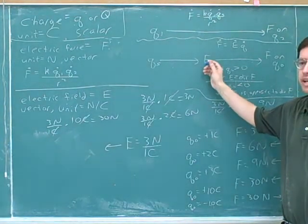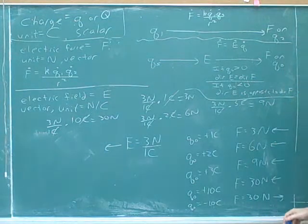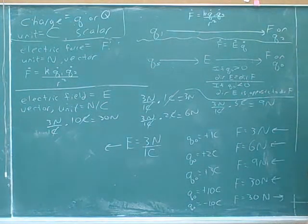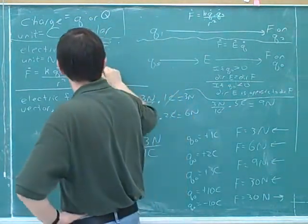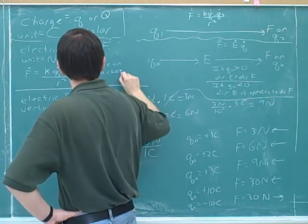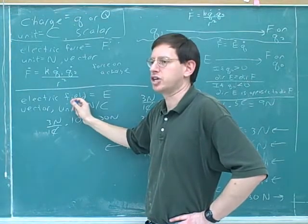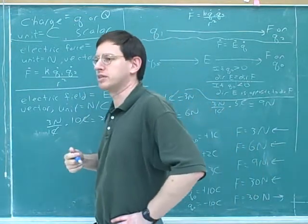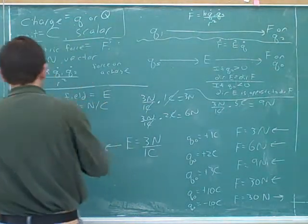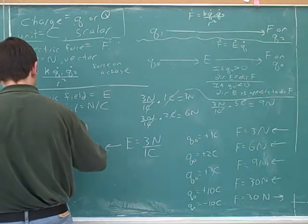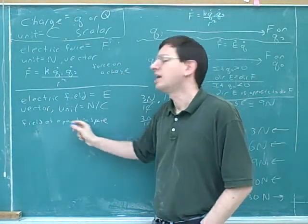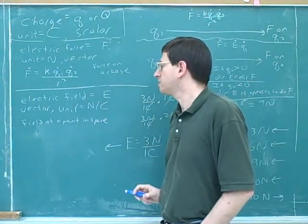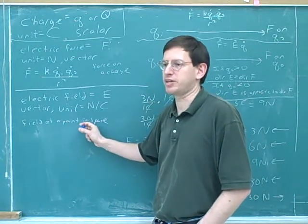So why is it so useful to know the electric field at a point in space? Because then that makes it very easy to figure out what a bunch of different forces might be based on what the charge is at that point. Now one thing to keep in mind is an electric force is exerted on a charge. We talk about the force on a charge. But you don't talk about the field on a charge. You talk about the field at a point in space.